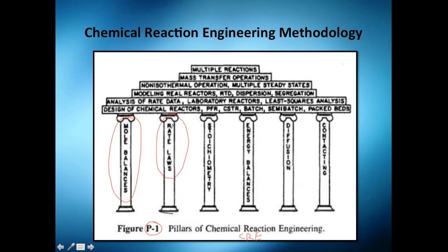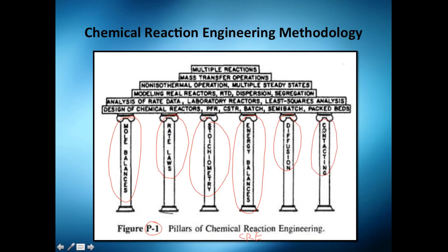Then you've got chapter 2 — no, chapter 3. Chapter 3 also covers stoichiometry. Then you need to apply some energy balances to do the non-isothermal reactions. Then there's a little diffusion and contacting — we're not going to see that much of those in this course. But if you have these foundations, you can design chemical reactors: PFR, CSTR, batch, semi-batch, packed beds.